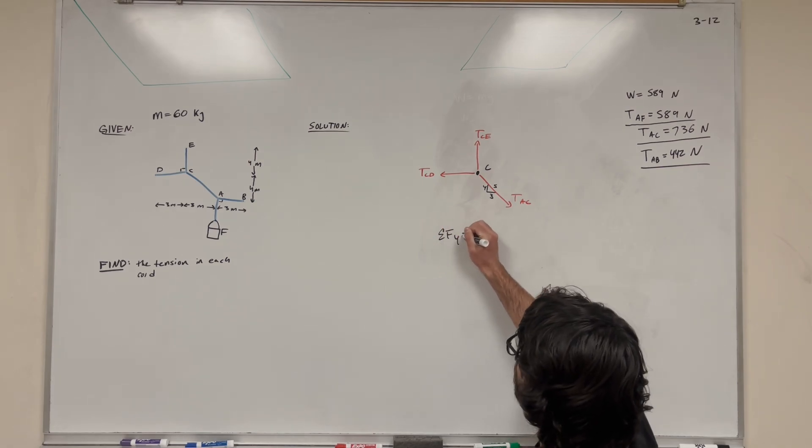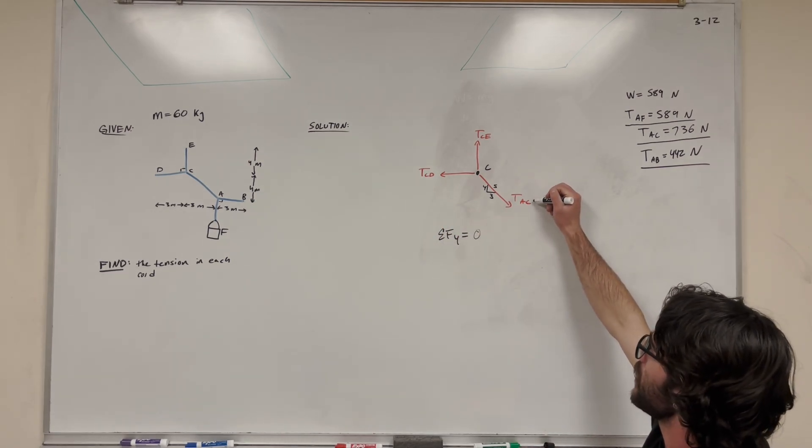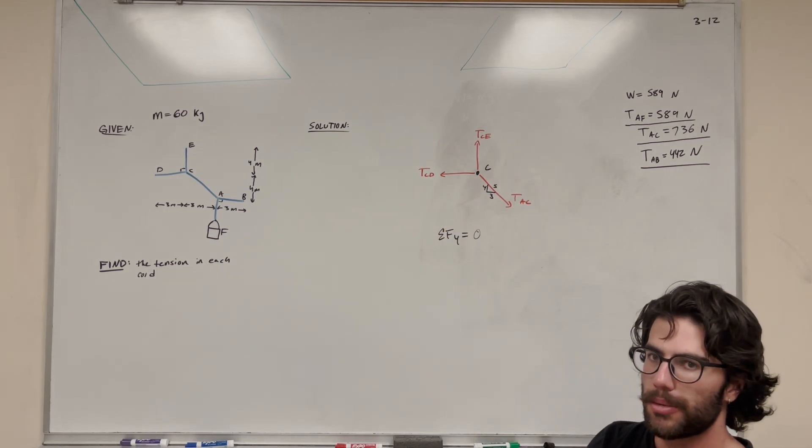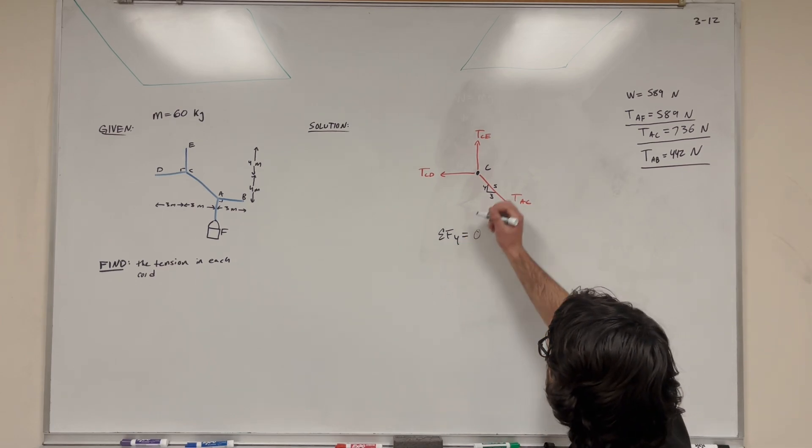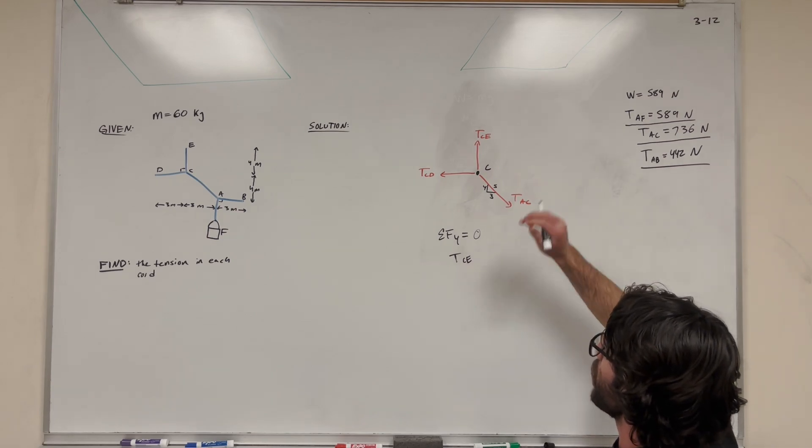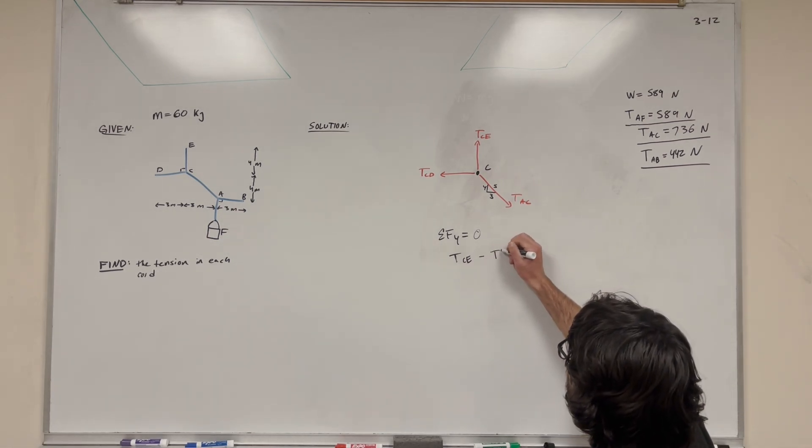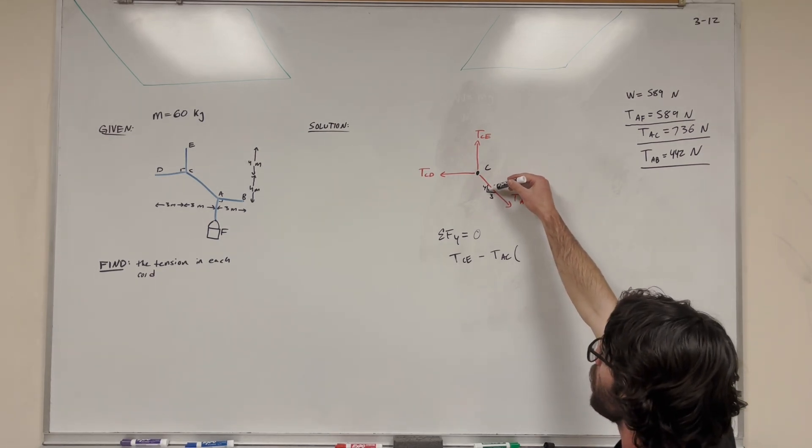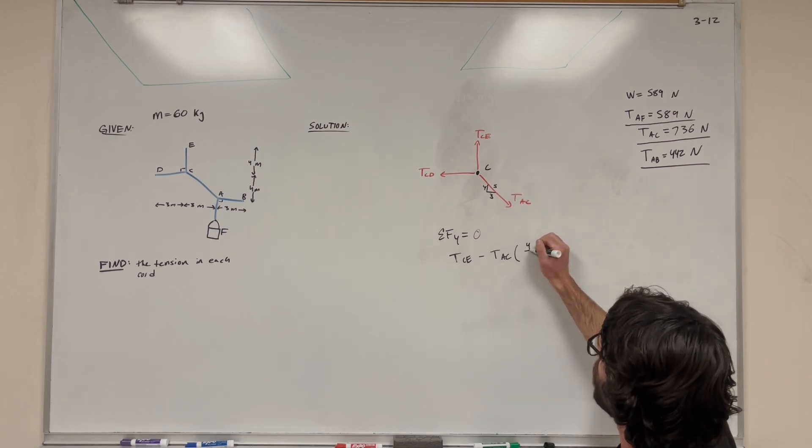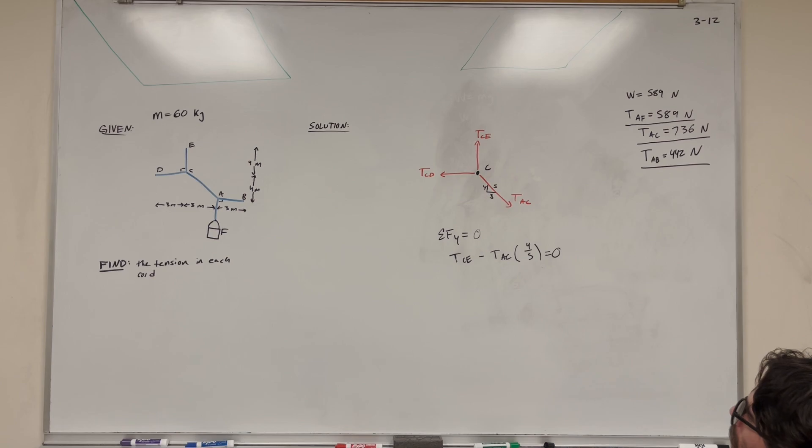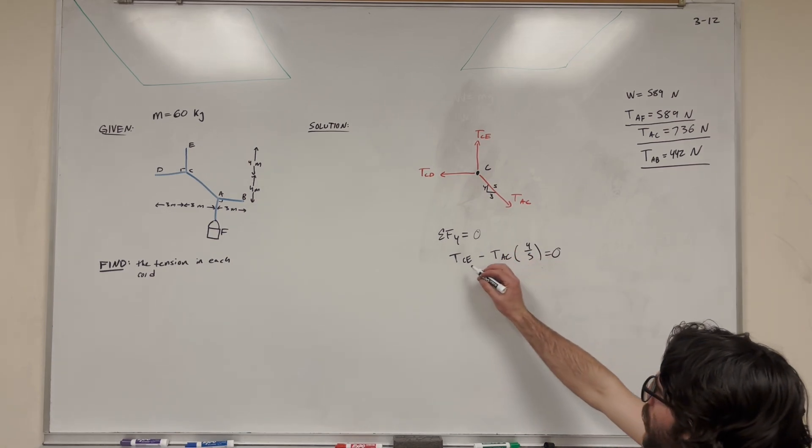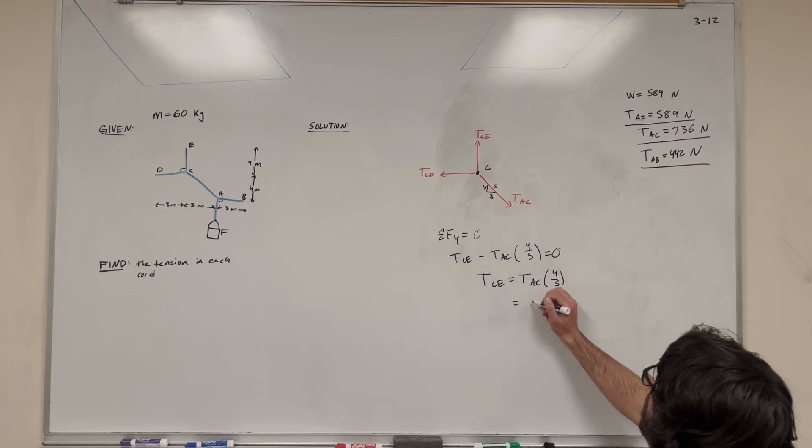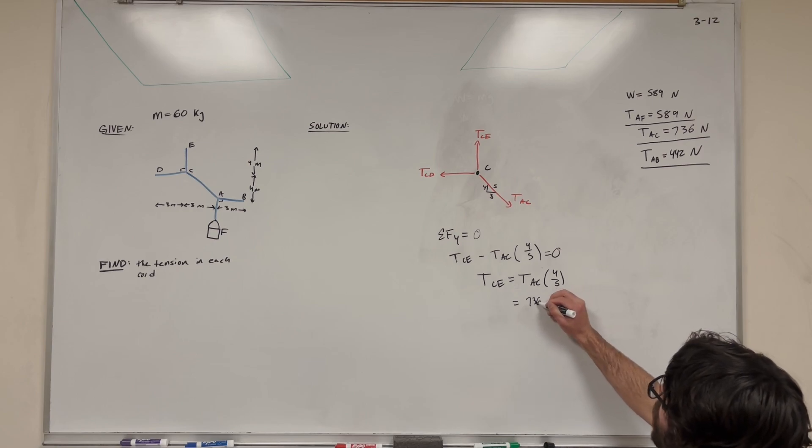So let's start with sum of the forces Y. I'm going to do sum of the forces for Y first because we know tension AC. So once we know one of these things, we can use it to solve the other one acting in the Y direction. I could also do sum of the forces in the X first. Either way would be just the same. So it's going to start out with tension CE. It's acting straight up so we don't have to worry about adding any things to it. And we're going to subtract tension AC. And again, it's acting at that 3, 4, 5 triangle. So we're looking at the Y direction. The Y direction is the 4. So we're going to have 4 fifths as our ratio. Set it equal to 0. And there we go. So we're going to move the tension AC to the other side. Tension CE is equal to tension AC times 4 fifths. We can plug tension AC to be 736 newtons times 4 fifths.